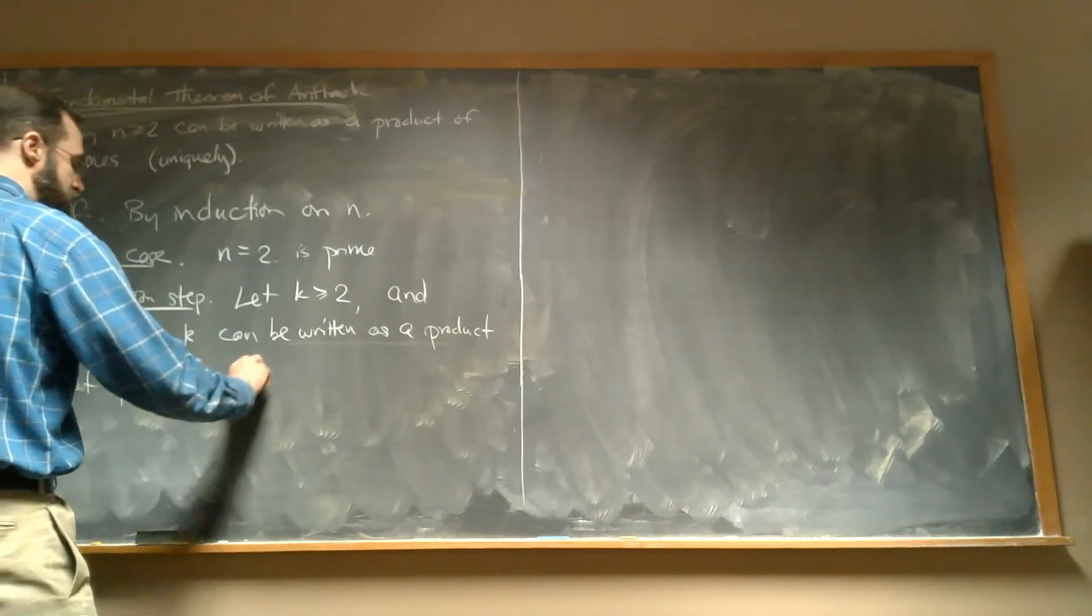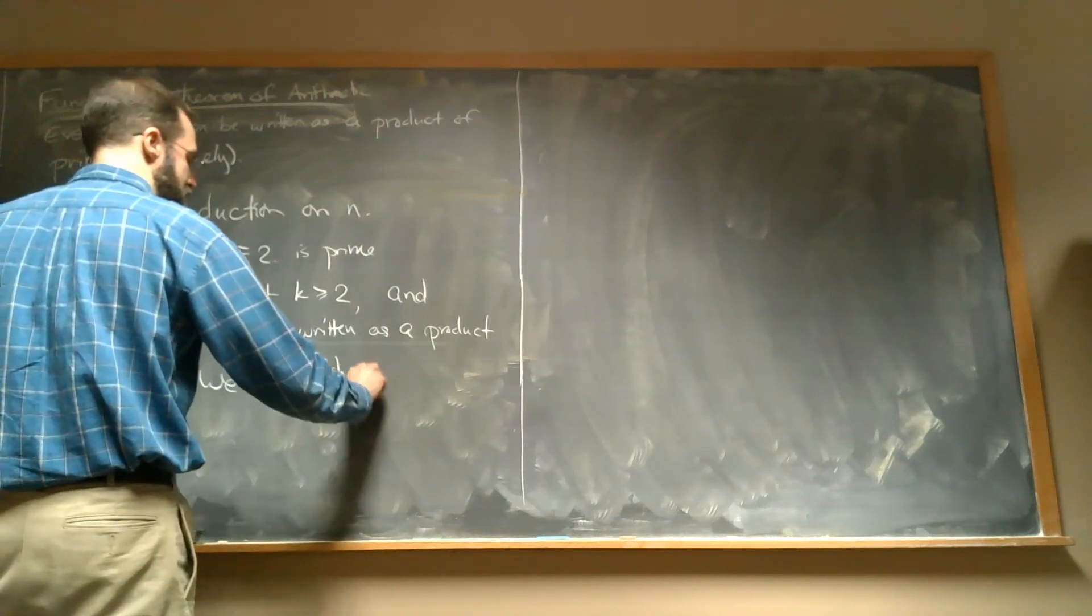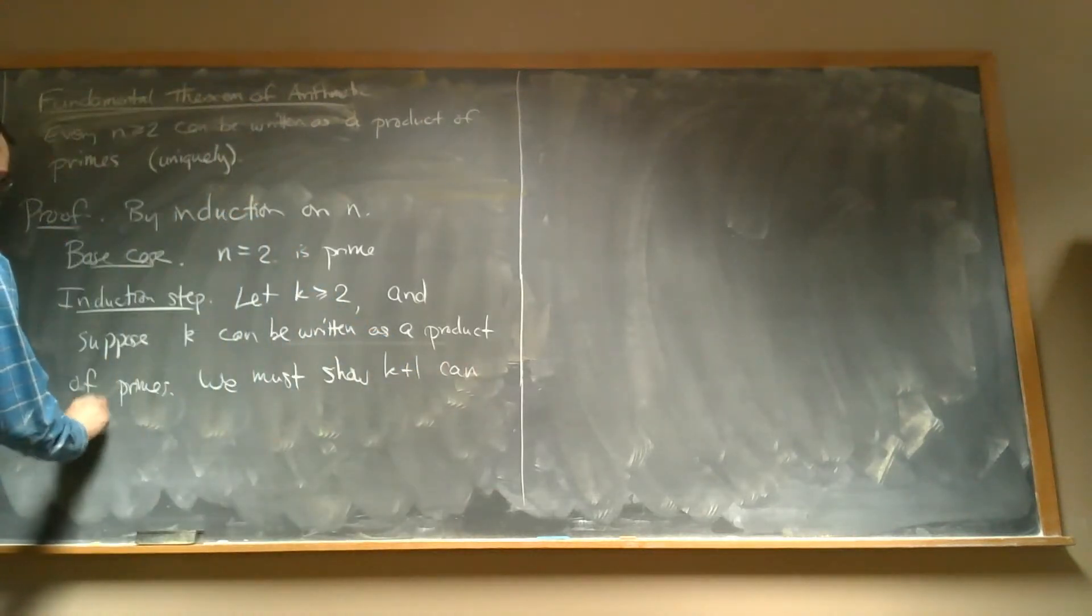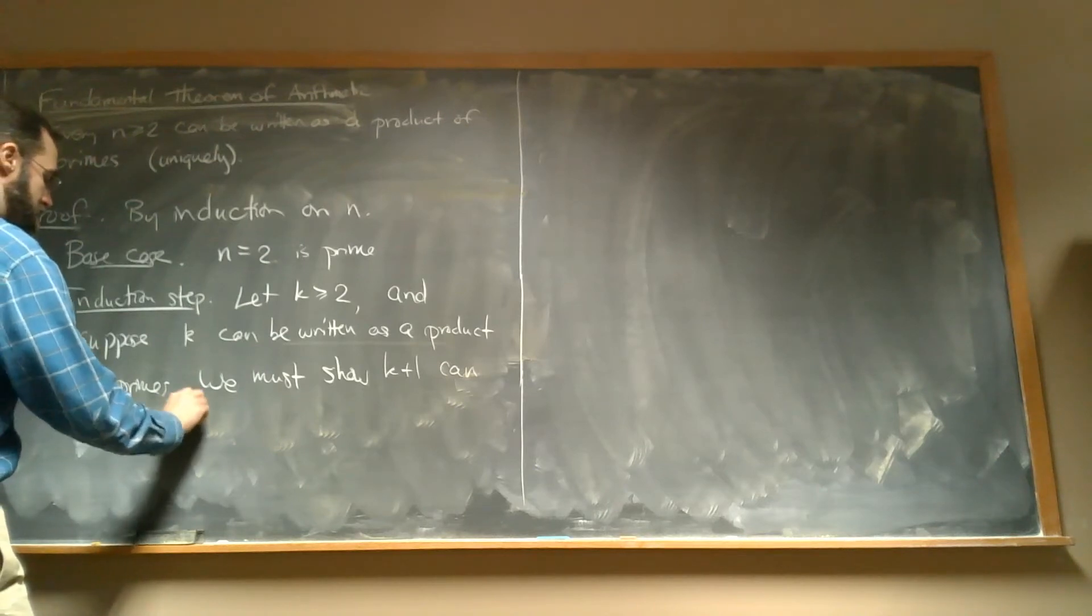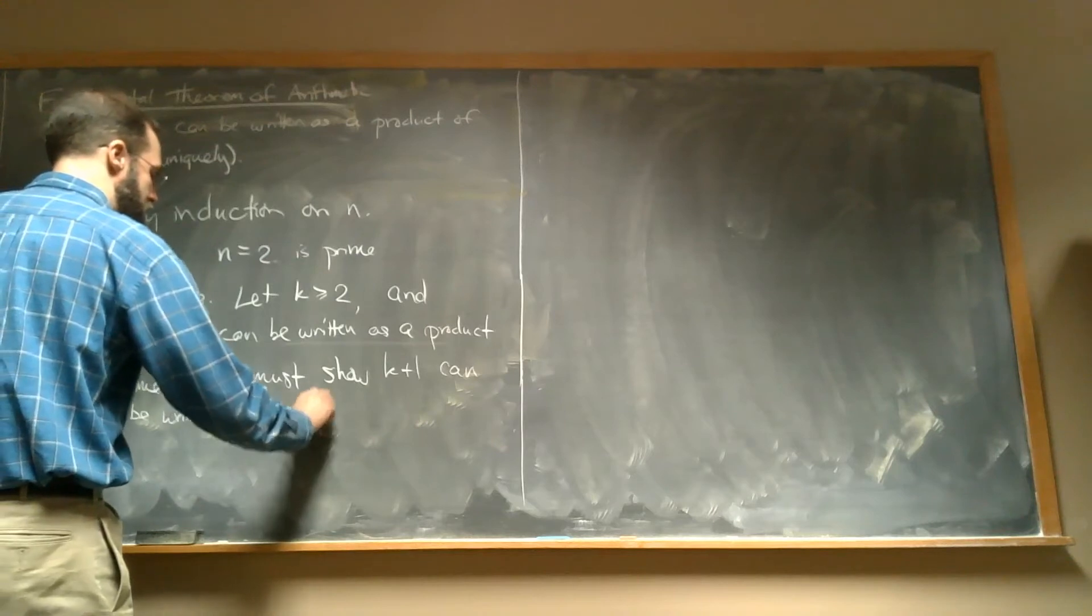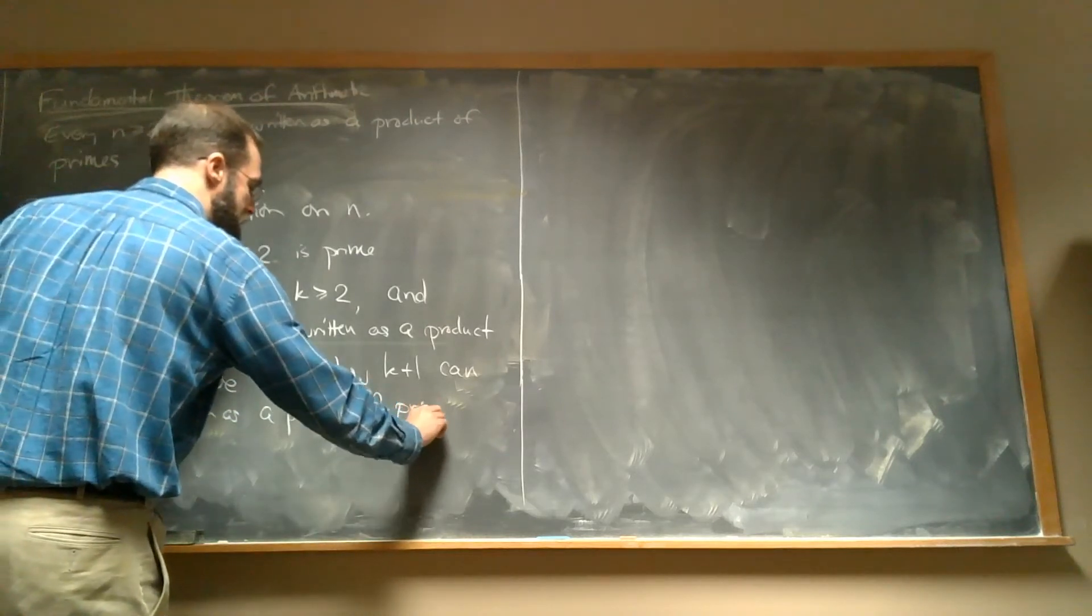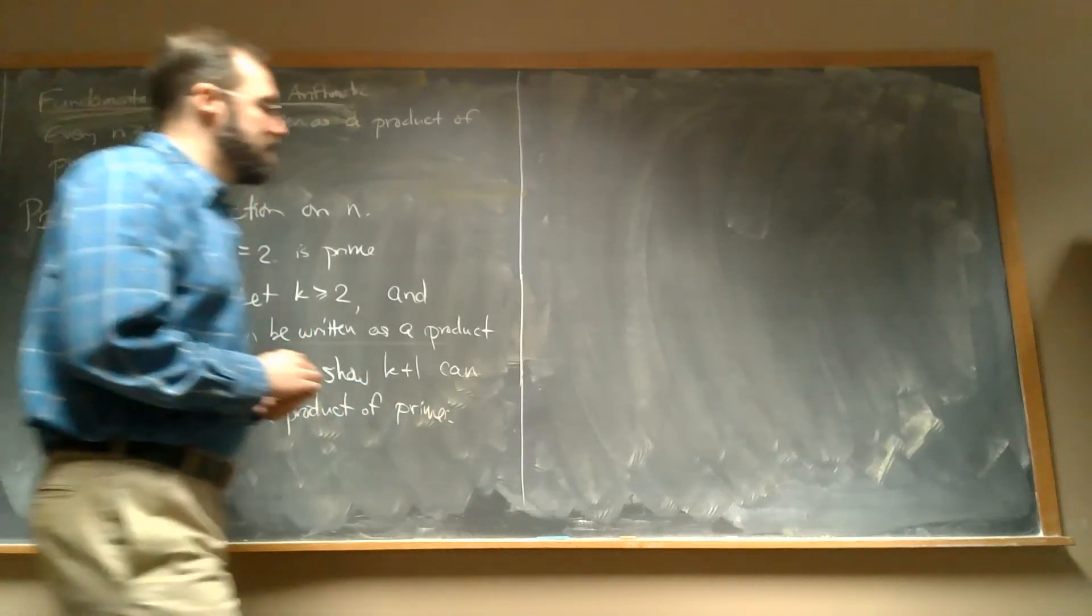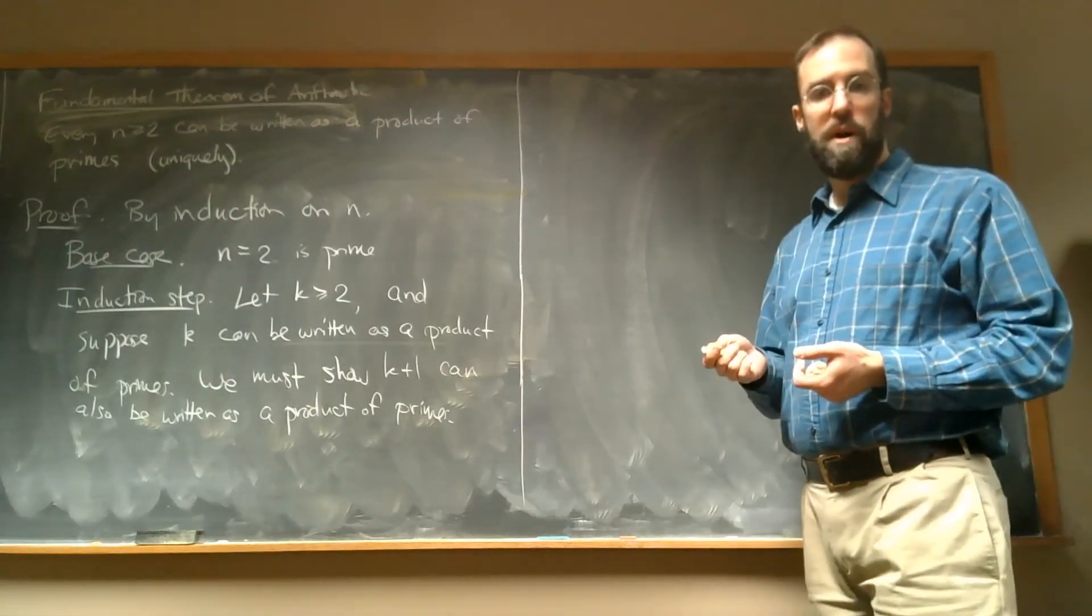And we're going to suppose that K can be written as a product of primes. All right, then we have to show that K plus 1 can also be written as a product of primes. Well, let's think about this number K plus 1. So K plus 1 could be prime, first of all.